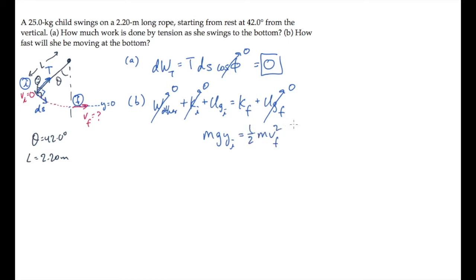We can rewrite this expression, solving for the final speed Vf, and it equals the square root of 2g Yi, where Yi is her initial height.